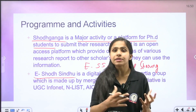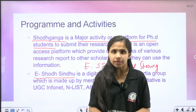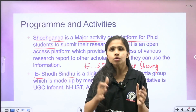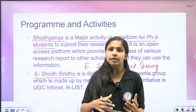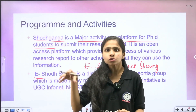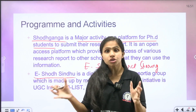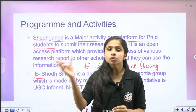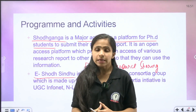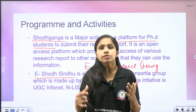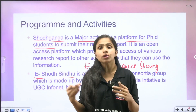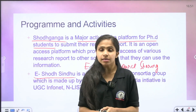Library consortia basically started from library cooperation and resource sharing. For example, if we take Library A, Library B, and Library C — three different libraries with different collections, different resources, and different users — some information and users overlap. So if we share resources among libraries, users can access the other library's resources and satisfy their information needs through library consortia. Different consortia groups form so that libraries with similar subject fields can share resources and provide users timely information access.